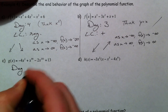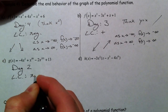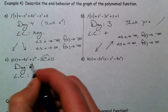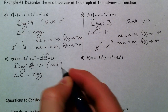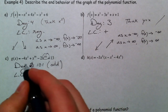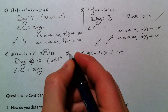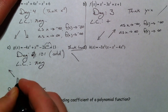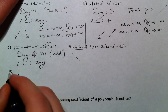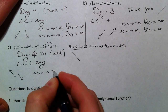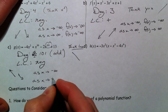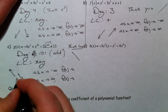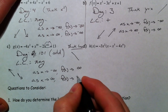Next one. The degree is not 2 — I was being fooled by my own trick. The degree is 101, which is odd. The leading coefficient is negative, so it behaves like a negative line. Think of the most basic odd degree function. Up to the left, down to the right. As x goes to negative infinity, f of x goes to positive infinity. And as x goes to positive infinity, f of x goes to negative infinity.